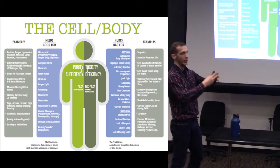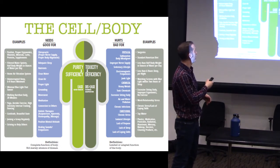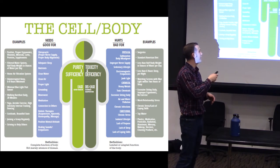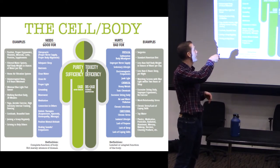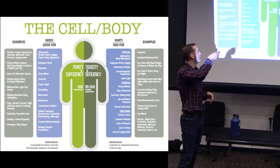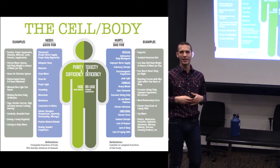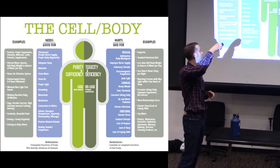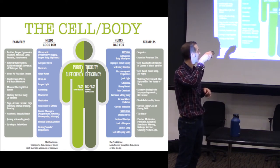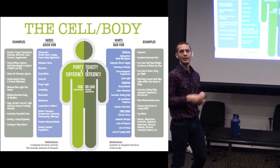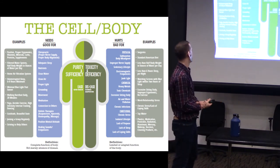Purity and sufficiency is what is needed to create ease or health — that cookie has everything it needs and none of the stuff it doesn't. Because if it has stuff inside of it that doesn't belong there — that hot sauce — that's called toxicity, and that would create dis-ease, sickness, or adaptive response.